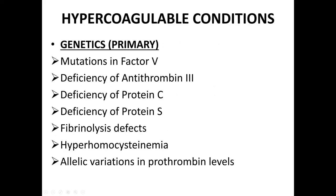Hypercoagulability conditions may be genetic (primary) or acquired. Genetic or primary causes include: mutation in factor 5, deficiency of antithrombin 3, deficiency of protein C, deficiency of protein S, fibrinolysis defects, hyperhomocysteinemia, and allelic variations in prothrombin levels.